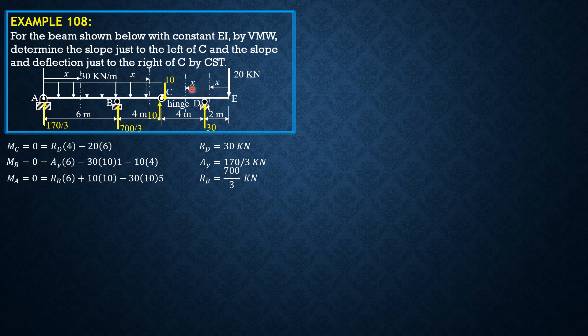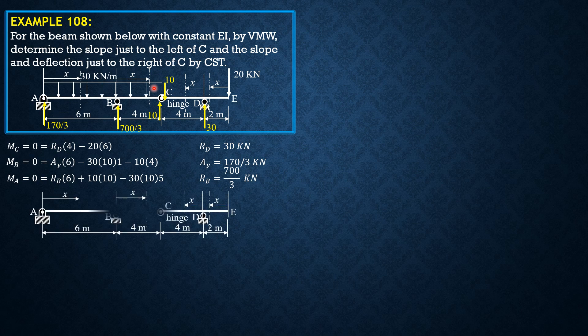By the virtual work method, for the slope just to the left of C, let's apply a positive unit couple of magnitude 1 just to the left of C as shown.